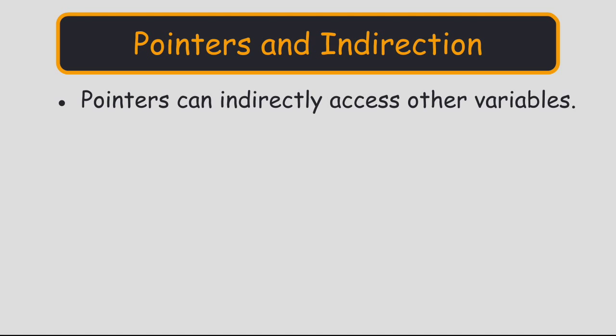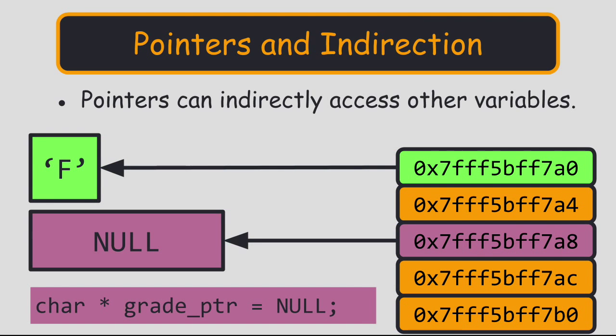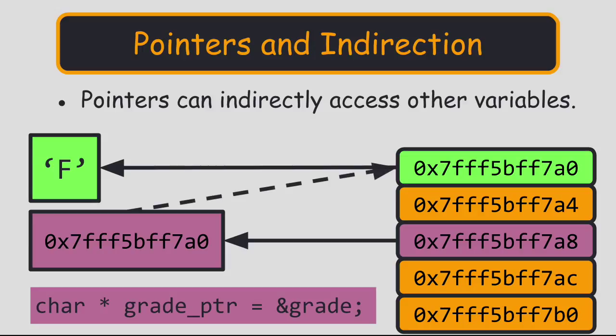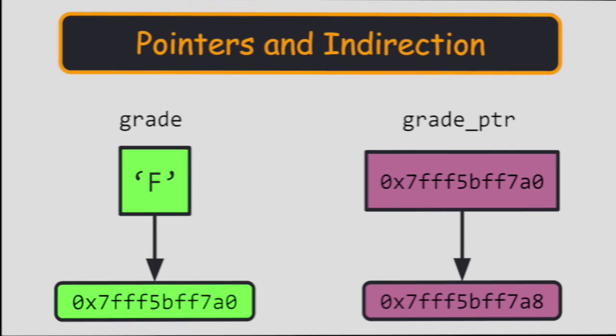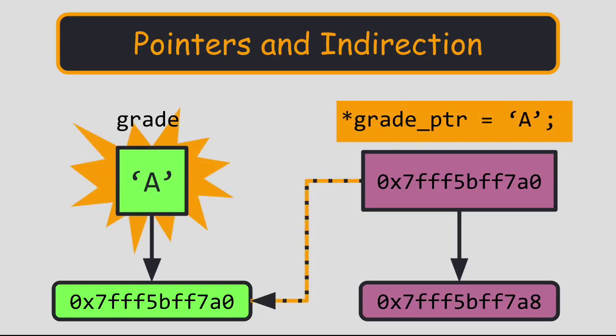A pointer can be used to indirectly change the contents of some variable. Here's an example. Suppose we want to change the char variable grade from F to A without touching the grade itself. We can do this as long as we have the address of grade. We can return the address of a variable by putting an ampersand in front of it. We can save this address in a pointer variable. Let's name this pointer something obvious, like grade pointer. Now we can view the contents of grade indirectly by using our grade pointer. We can also change the contents of grade with our grade pointer. To access or make changes to the value in grade, we put an asterisk in front of grade pointer.